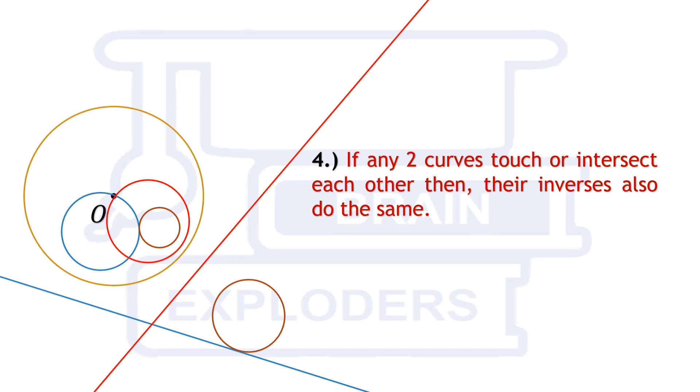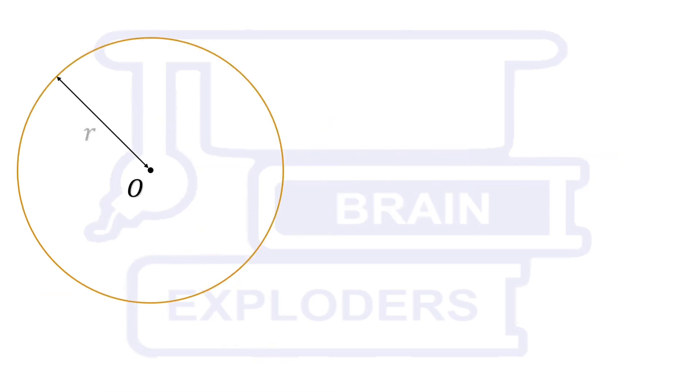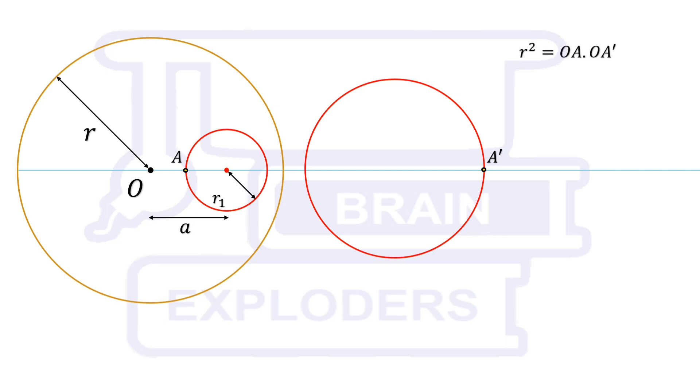Let's see what is the relation between the radii of the circles which are inverse of each other. Suppose center of one of the circle is at a distance of a from o and its radius is r1. If a is the point on this circle which is nearest to o then a dash must be the point on inverse circle which is farthest from o. So r squared must be equal to oa times oa dash. oa is equal to a minus r1, we get oa dash equals to r squared over a minus r1.